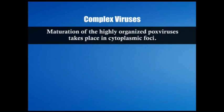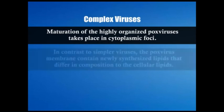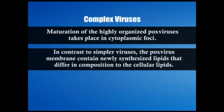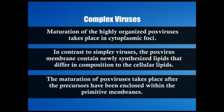Matrix proteins in the viral envelope are usually not glycosylated and stick to the cytoplasmic side of the plasma membrane via hydrophobic domains, connecting the cytoplasmic domains of envelope glycoproteins with the cell cytoskeleton and collecting viral glycoproteins to form the virion. For complex viruses such as poxviruses, maturation takes place in cytoplasmic inclusion sites; the poxvirus membrane contains newly synthesized lipids differing in composition from cellular lipids, and maturation occurs after precursors are enclosed within primitive membranes.